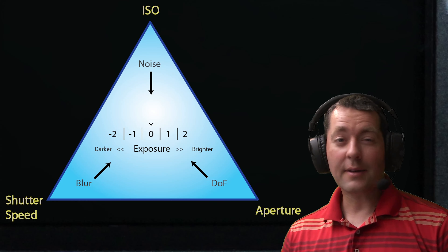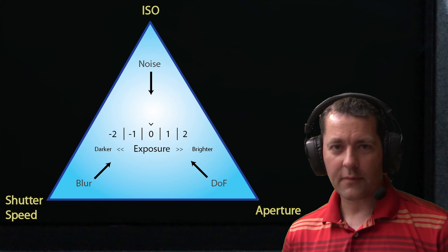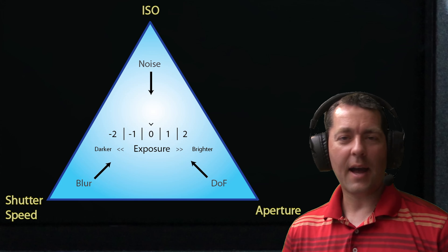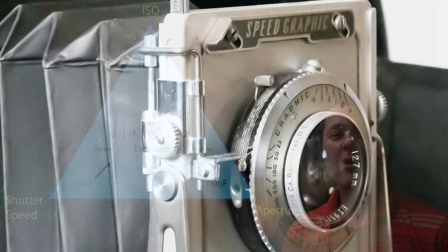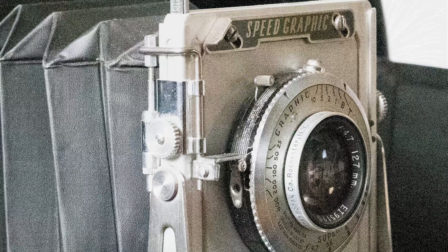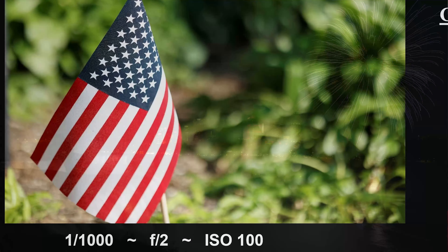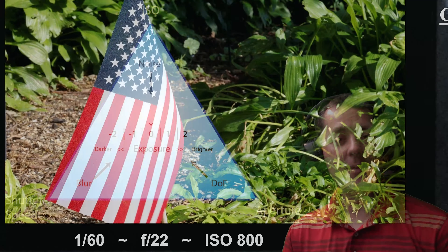The exposure triangle can be kind of daunting, and we're going to get into some of the basics of the compromises of each one. Each one has its attributes, its factors. As the ISO goes up higher, the grain and noise becomes more obvious, the quality deteriorates, the colors aren't quite as crisp and saturated. If the shutter speed becomes too slow, it adds a certain element of blur to the scene. If the aperture is more open or less open, it will change how much is in focus or how much is out of focus — we call that depth of field.